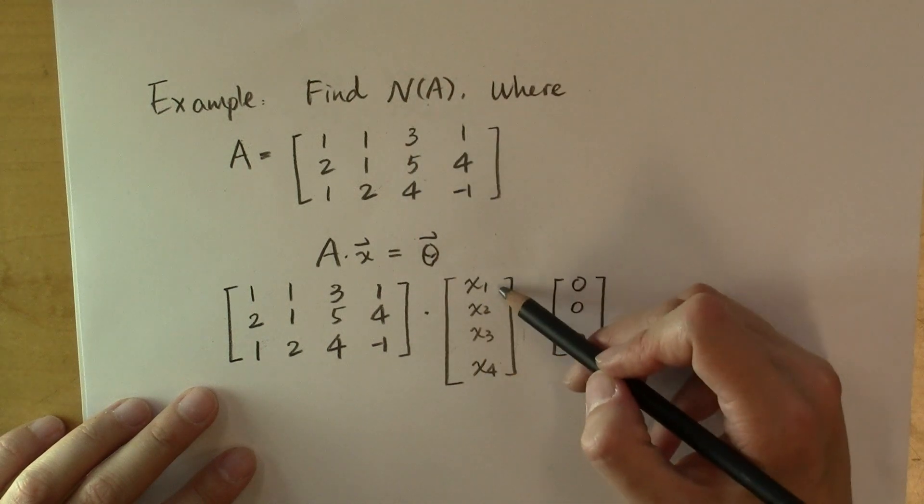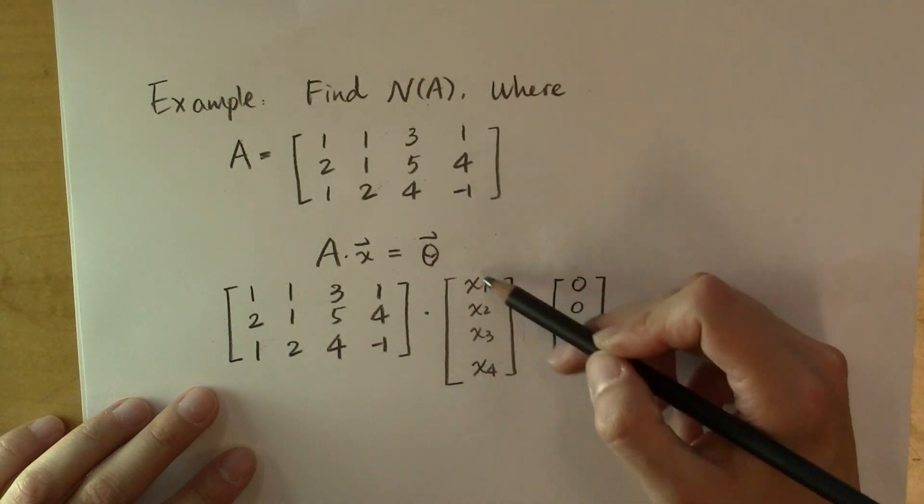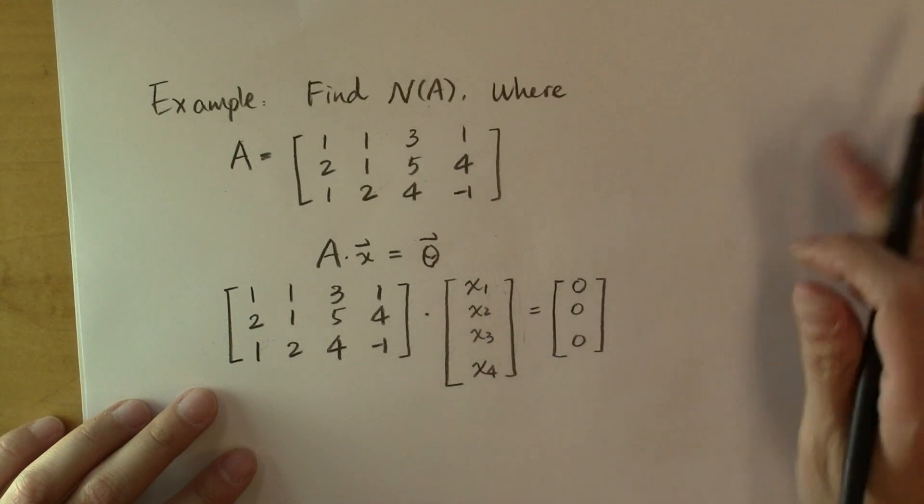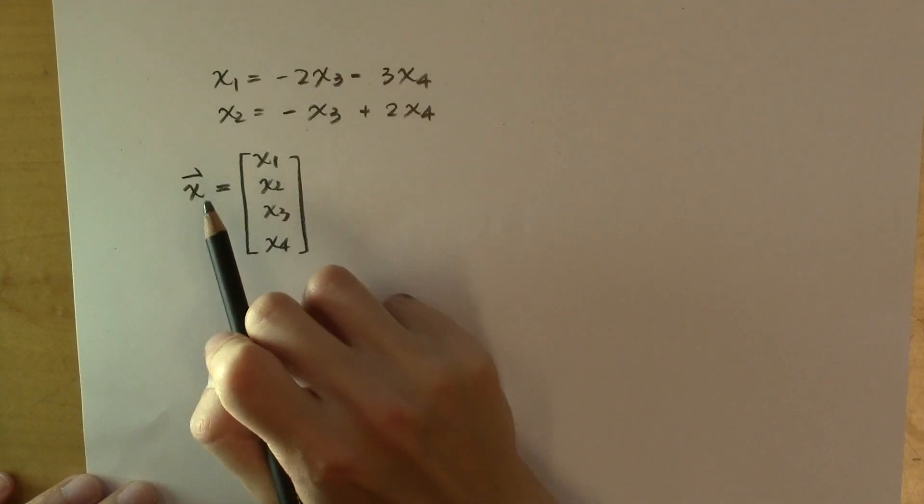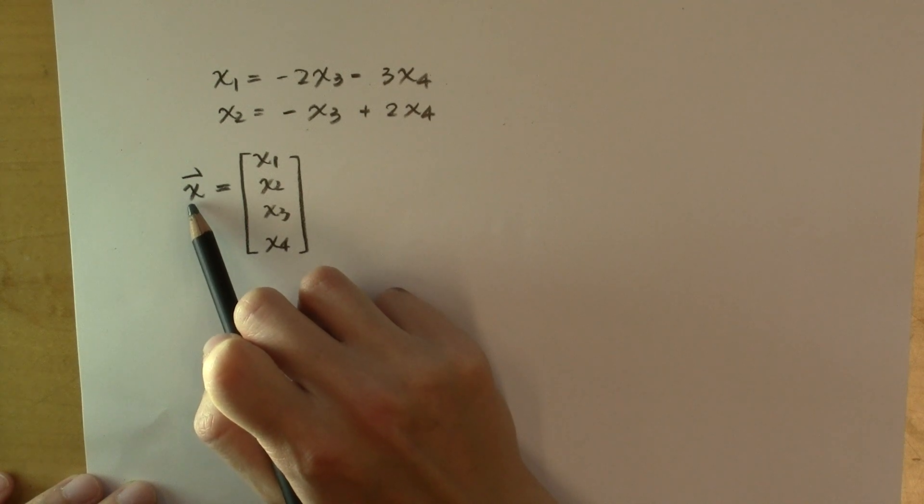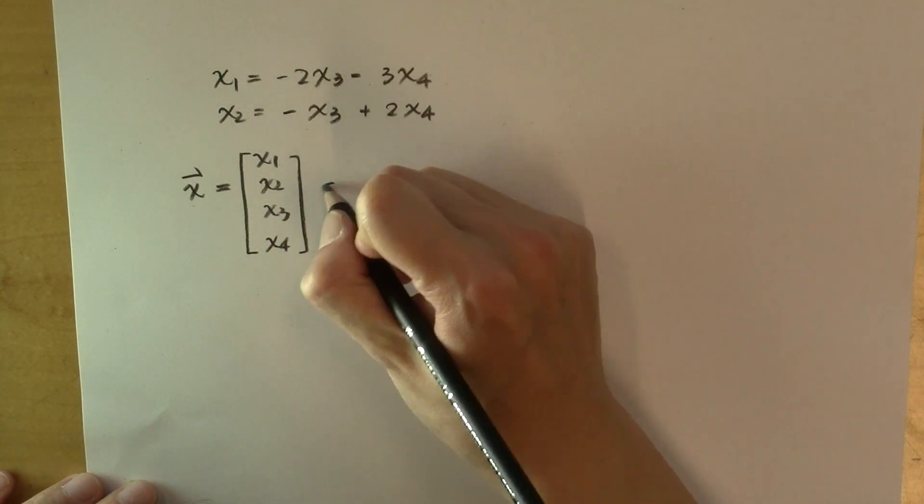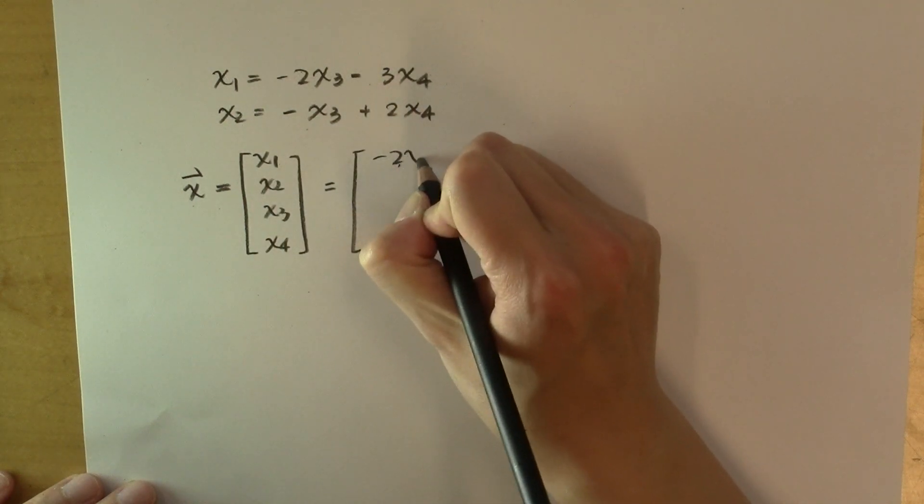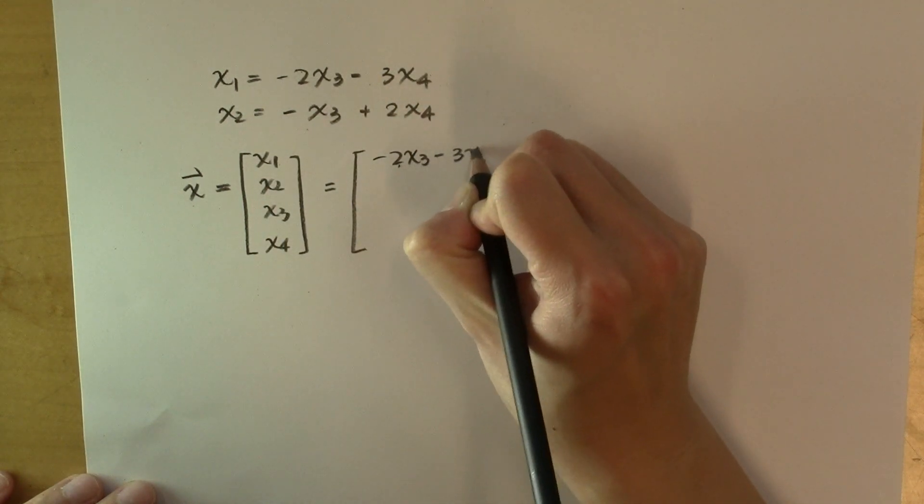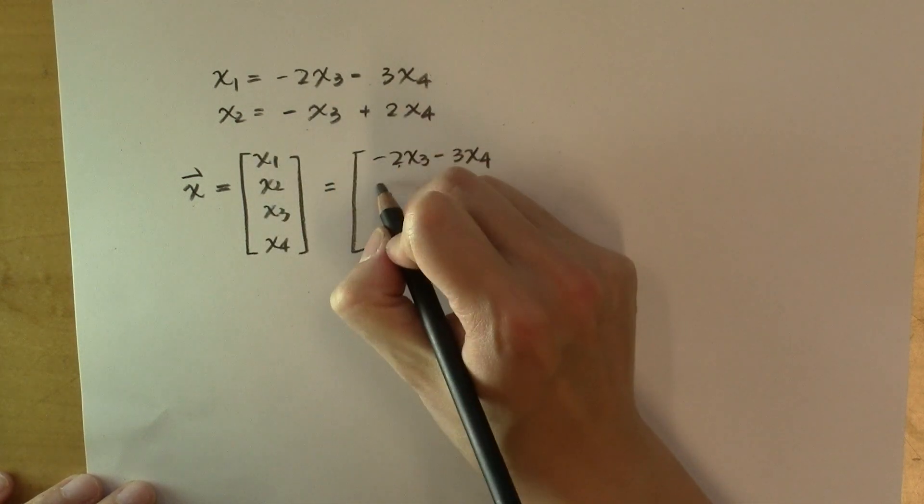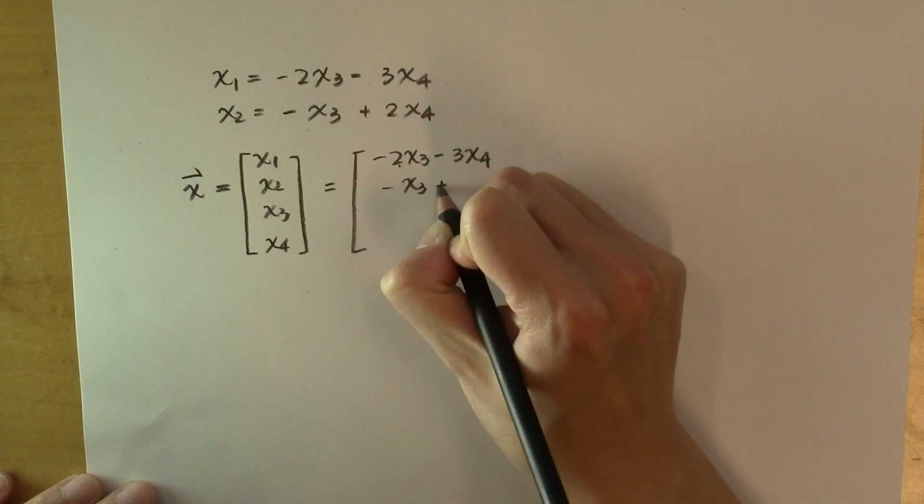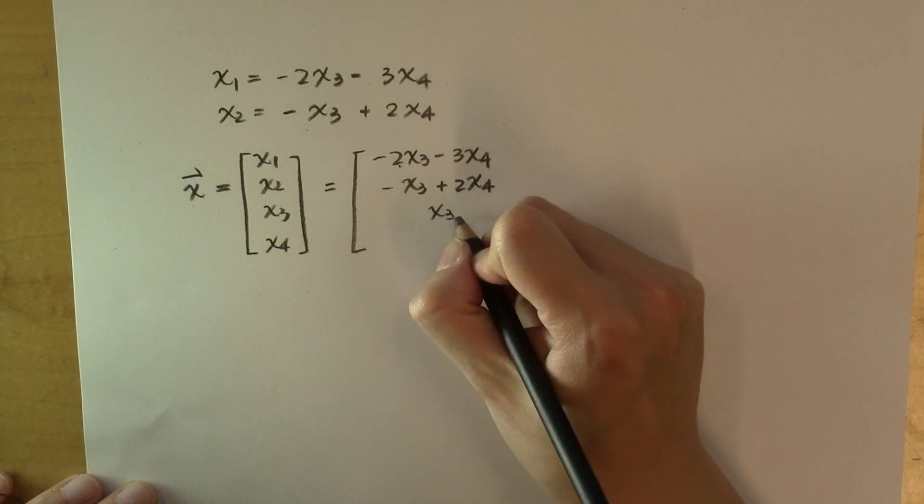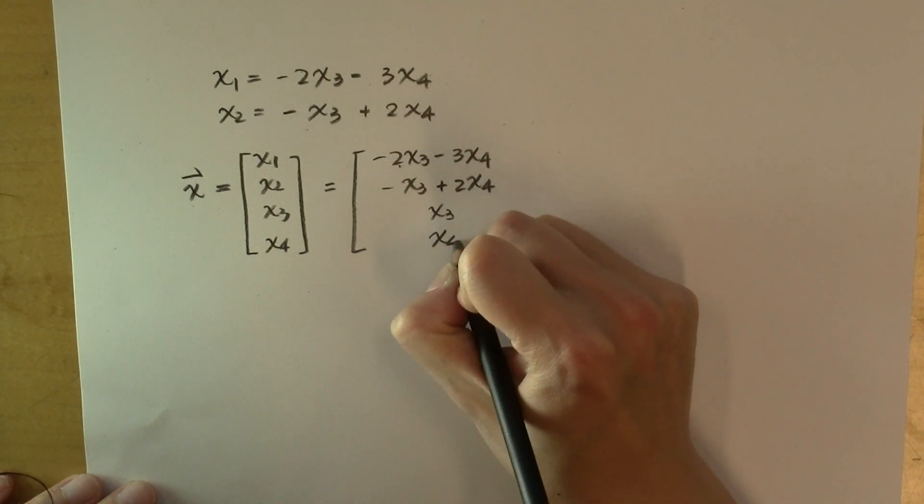So the null space of A is the set of vectors that are 4 by 1, whose components x sub 1, x sub 2, x sub 3, x sub 4, satisfy these two relationships. Namely, it contains all those vectors x that are 4 by 1, whose components can be written as x sub 1 is equal to -2x sub 3 - 3x sub 4, x sub 2 is -x sub 3 + 2x sub 4, and x sub 3 is free to take any values, and so is x sub 4.